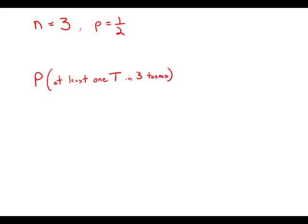The probability is one half that a certain coin will turn up heads on any given toss. If the coin is to be tossed three times, what is the probability that on at least one of the tosses the coin will turn up tails?